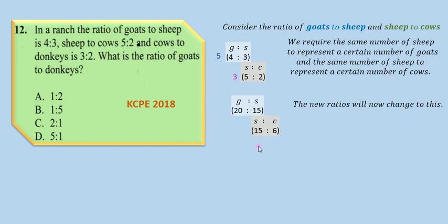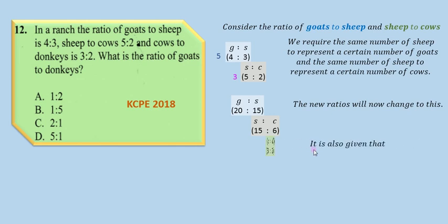The same number of sheep is now representing both goats and cows. In other words, for every 15 sheep you have 20 goats, and for the same 15 sheep you have 6 cows.